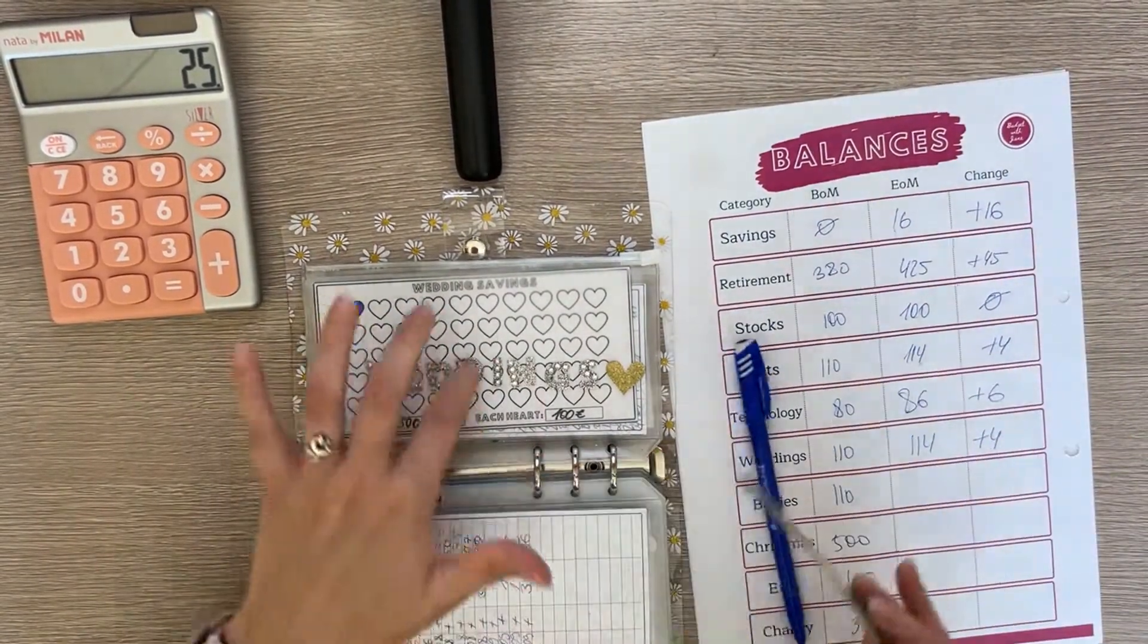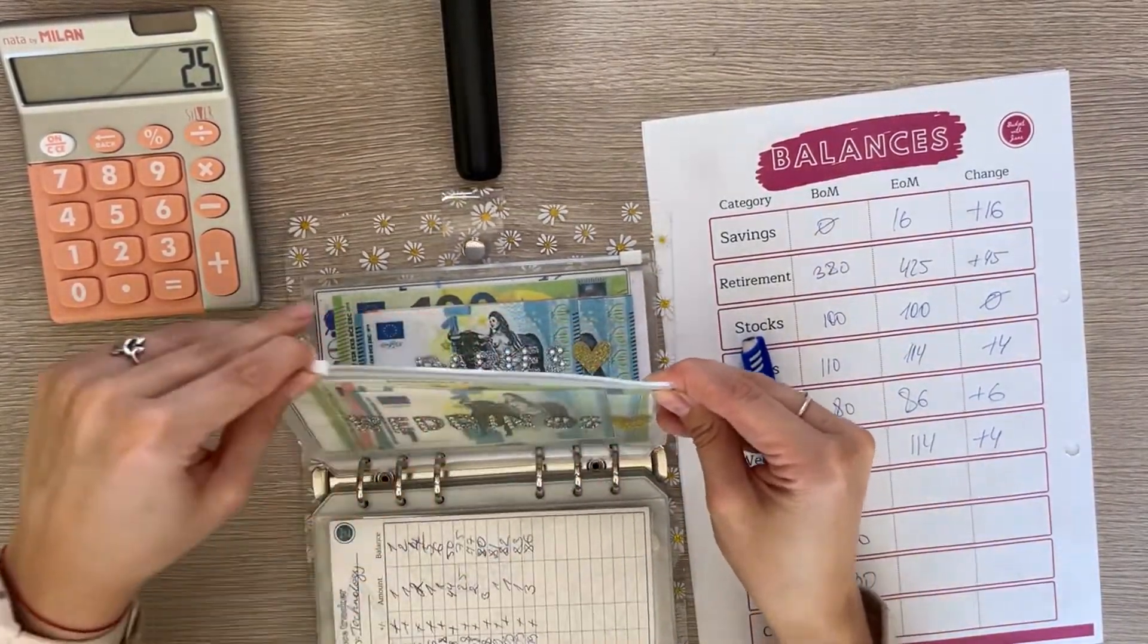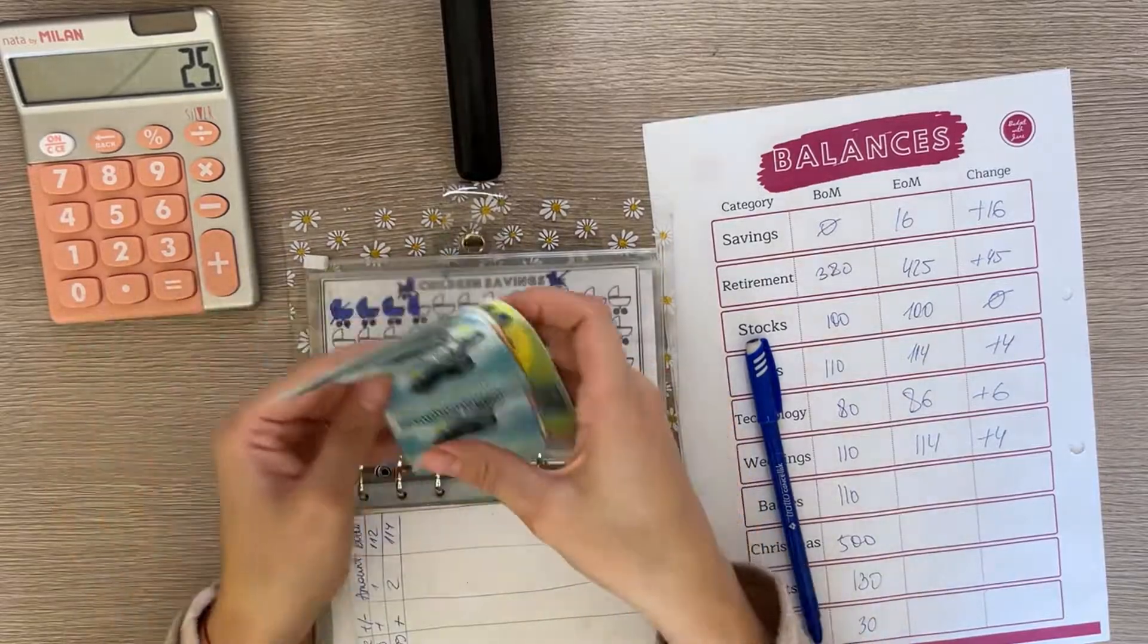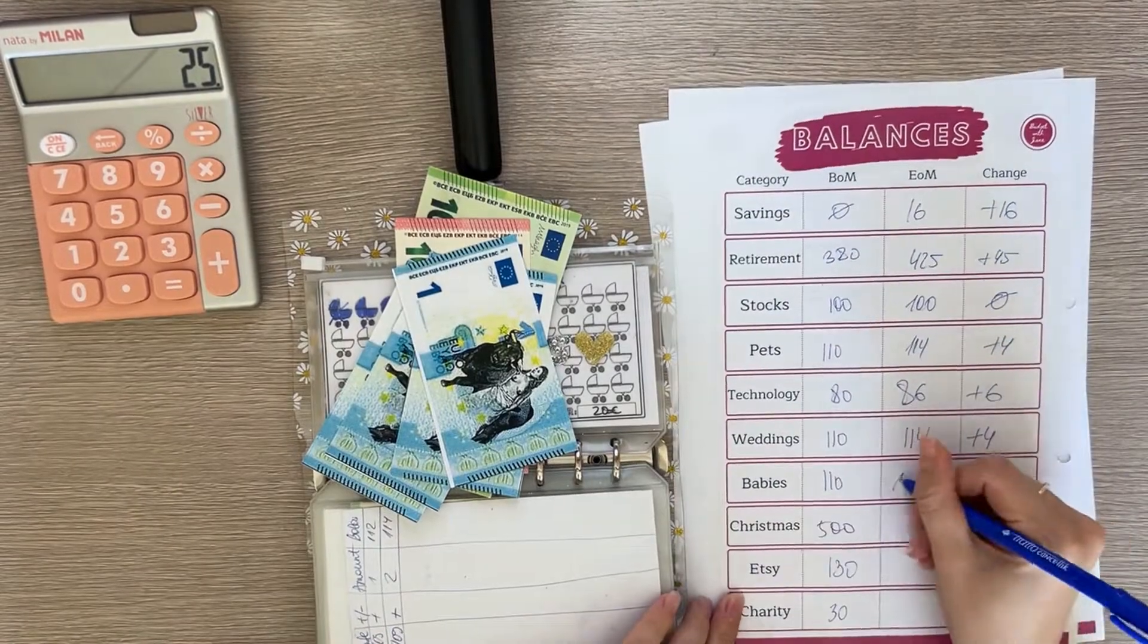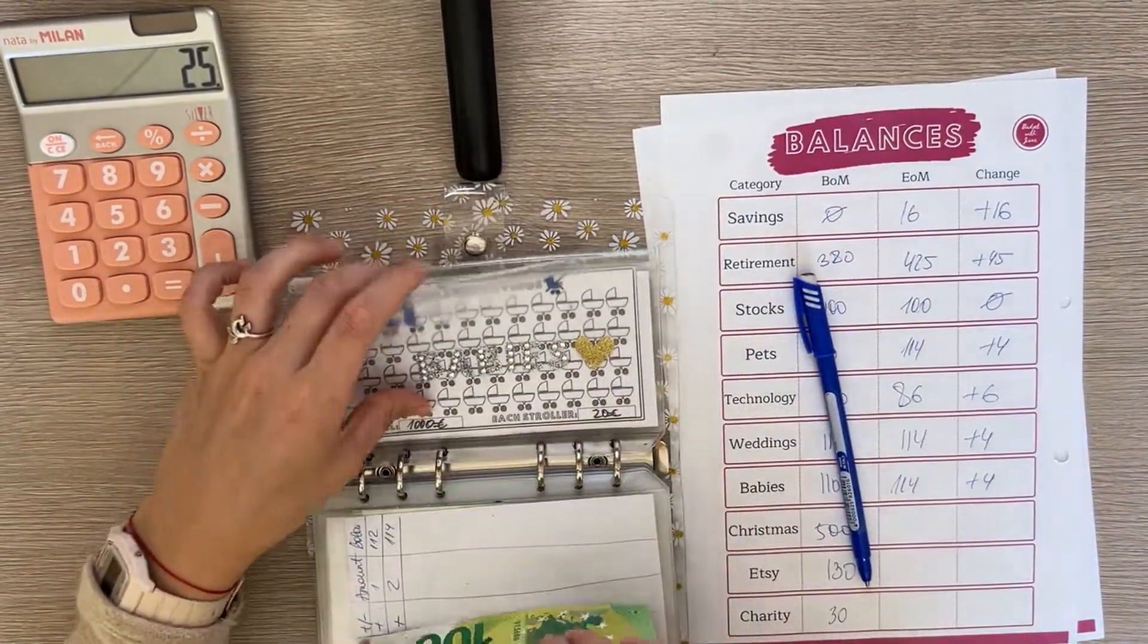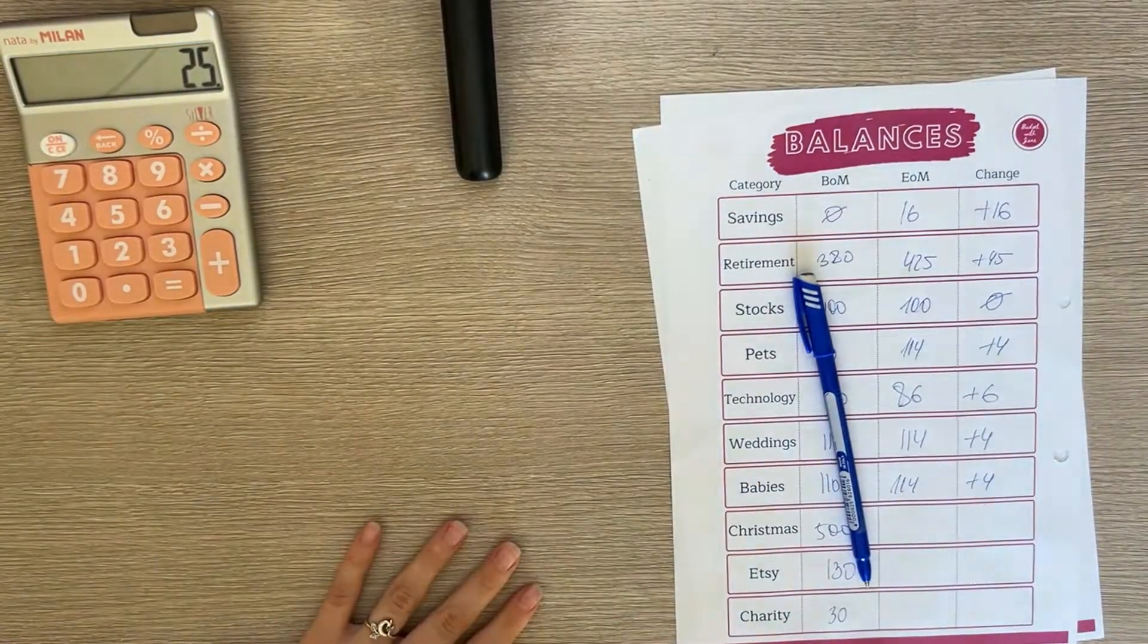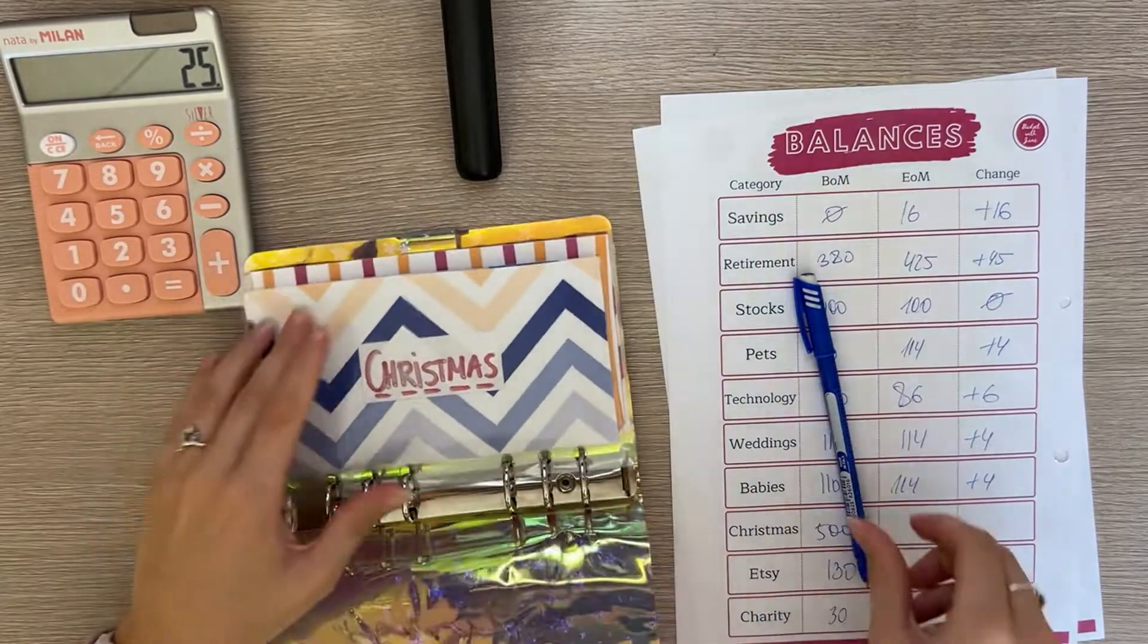Weddings is next and it has $114, also a plus four. We can't color in another heart because one heart is 100 euros. Babies has $114 as well, also a plus four difference and we can't color in another stroller yet but we will definitely soon.